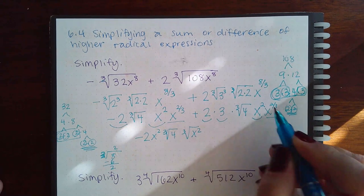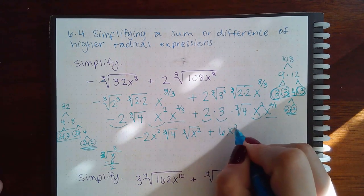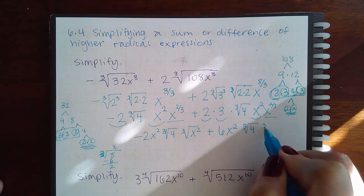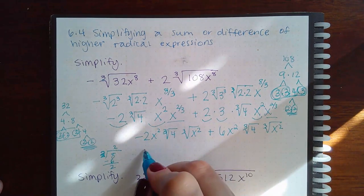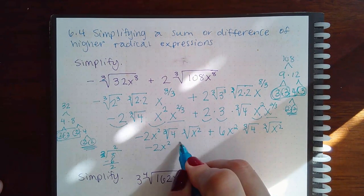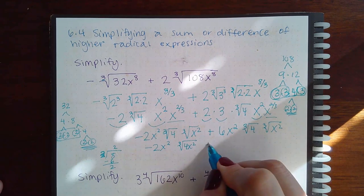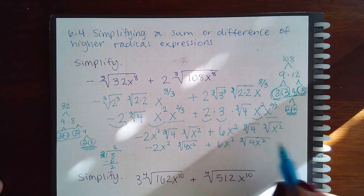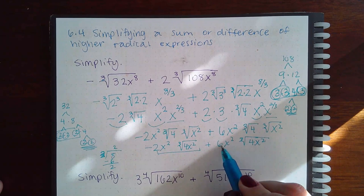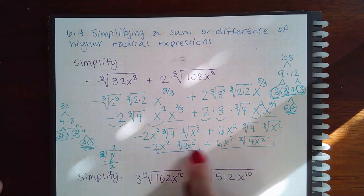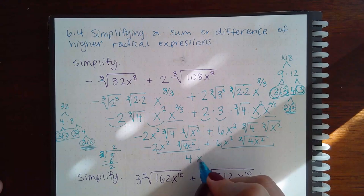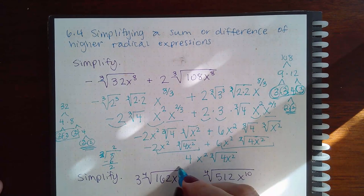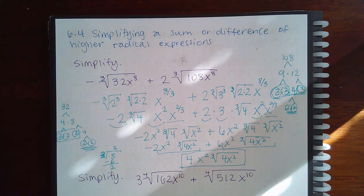This term, this term, and this term multiplied together give me 6x squared, and then the third root of 4. That remaining term is the third root of x squared, so I can multiply those together to get the third root of 4x squared. I have x squared and the cube root of 4x squared in common, so negative 2 plus 6 is positive 4, and I keep that like part. This is the final answer.